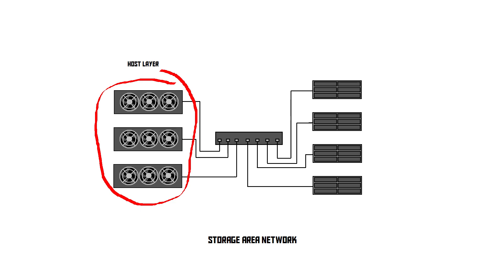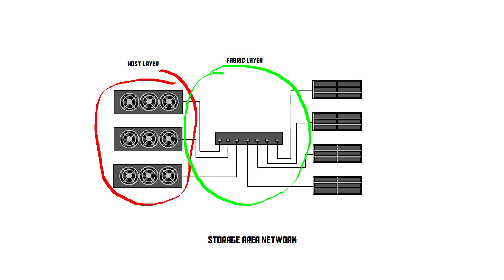The next type of device in a SAN is called the fabric layer. This is all of the networking equipment and cabling used to connect all of these devices to each other. Just like in a regular network you've got switches and so on, but what's different in a SAN is that most SANs don't use regular Ethernet cables. Instead, they use very high-speed fiber optic cabling, along with specialized switches and networking equipment compatible with that special cabling.